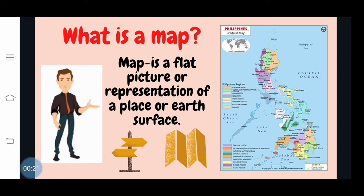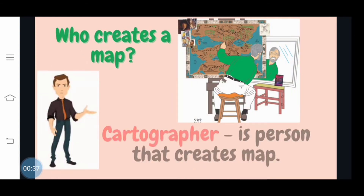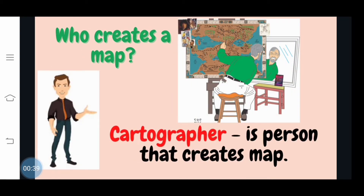A map is a flat picture or representation of a place or the Earth's surface. For example, the Philippines political map that shows the different regions of the country. Now that you already know the meaning of the word map, it's time to figure out who is responsible for creating a map. We call them Cartographers. They design, layout, and create maps for us.